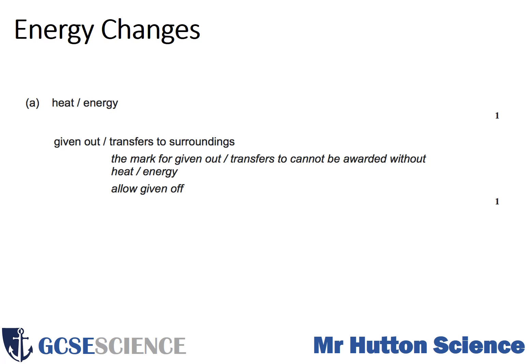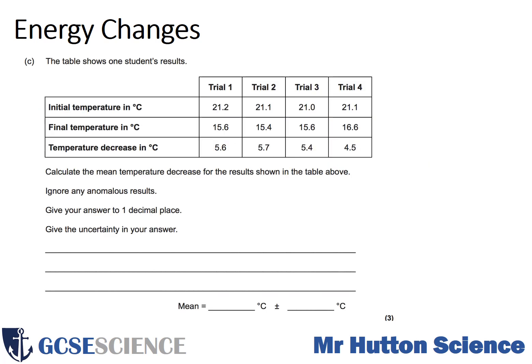Here is the mark scheme. This next question is linked to some practical work. They've looked at the start temperature, the final temperature, and measured the temperature decrease. You're asked to calculate the mean from the results in the table, ignoring any anomalous results — those that don't fit the trend or pattern. Give your answer to one decimal place; if you don't, you could lose a mark. The last part asks you to measure the uncertainty in your answer.